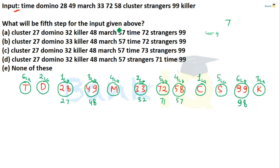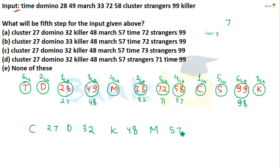Question: What will be the 5th step of the input given above? In step 5, the arrangement from left is: C 27, D 32, K 48, M 57, S 71, T 99. Checking the answer: C 27 D 32 K 48 M 57 S 71 T 99. The right answer is D1.